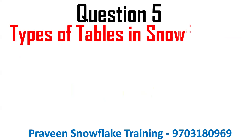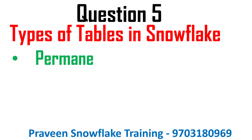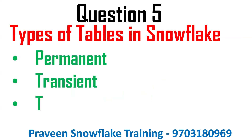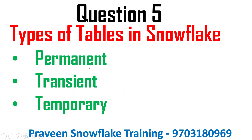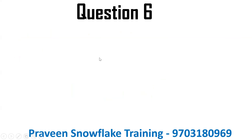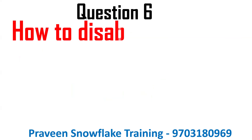Question: what are the types of tables in Snowflake? There are permanent tables, transient tables, and temporary tables — these are called Snowflake internal tables. By default, when you create any table, a permanent table will be created. Data for all three types is stored inside Snowflake.